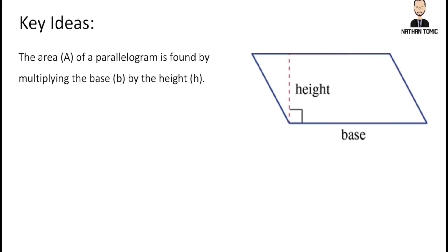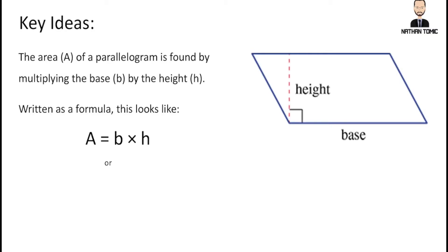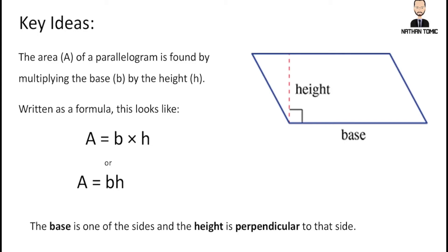The area of a parallelogram is found in a similar way to the area of a rectangle — we take a base measurement and multiply it by a height measurement. We write the formula as: area equals base times height, or b times h, which in algebraic form is written as A = bh, remembering that we can drop the multiplication sign when two letters are placed next to each other.